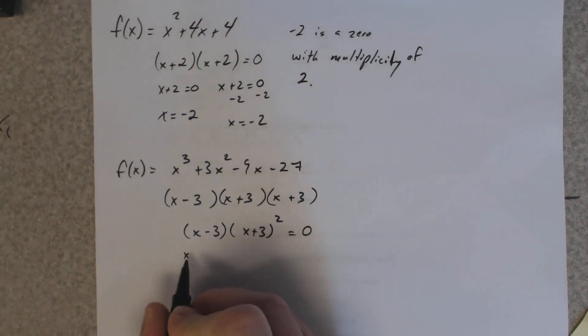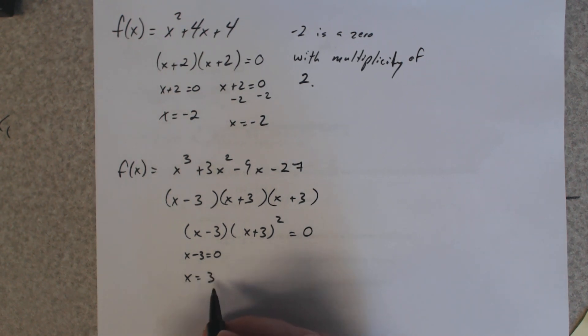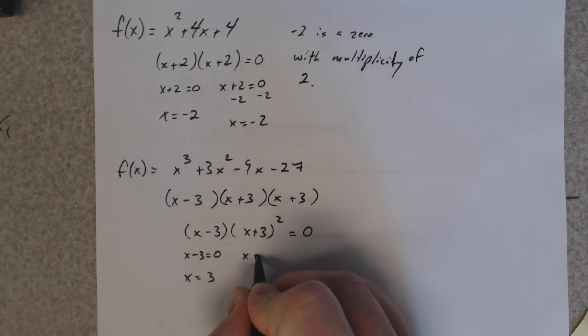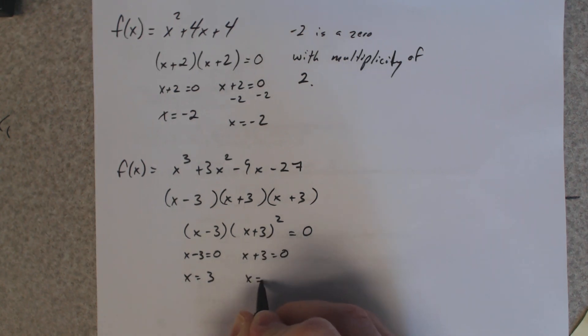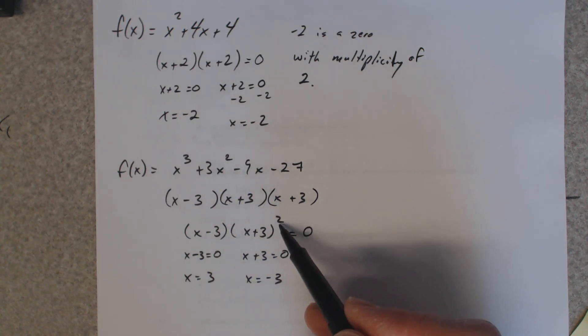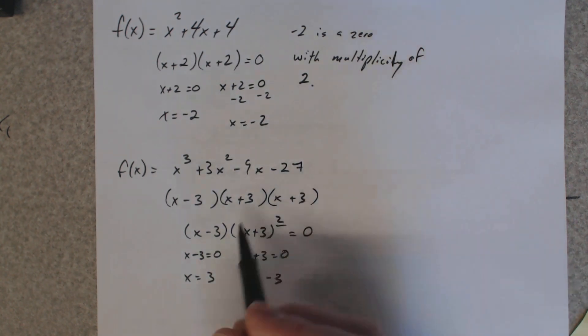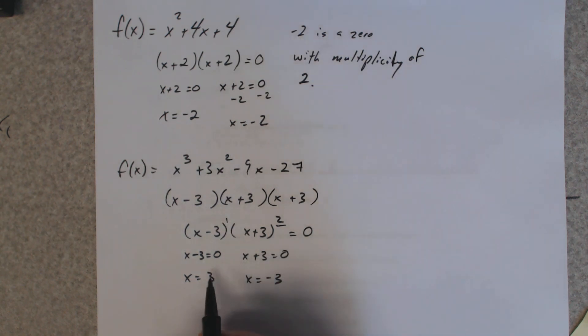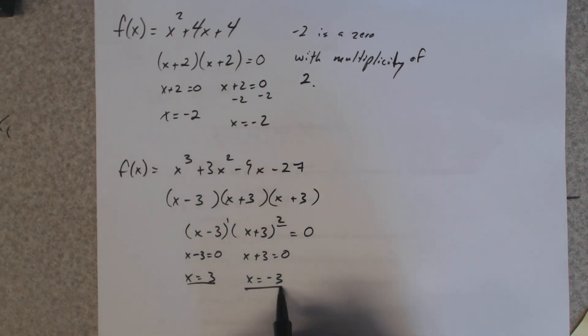So let's see. If I set this equal to 0, that means 3 is a zero. It has a multiplicity of 1 because it occurs once. If I set this guy equal to 0, I get negative 3. Well, this has a multiplicity of 2. This has a multiplicity of 1, and this guy has a multiplicity of 2.